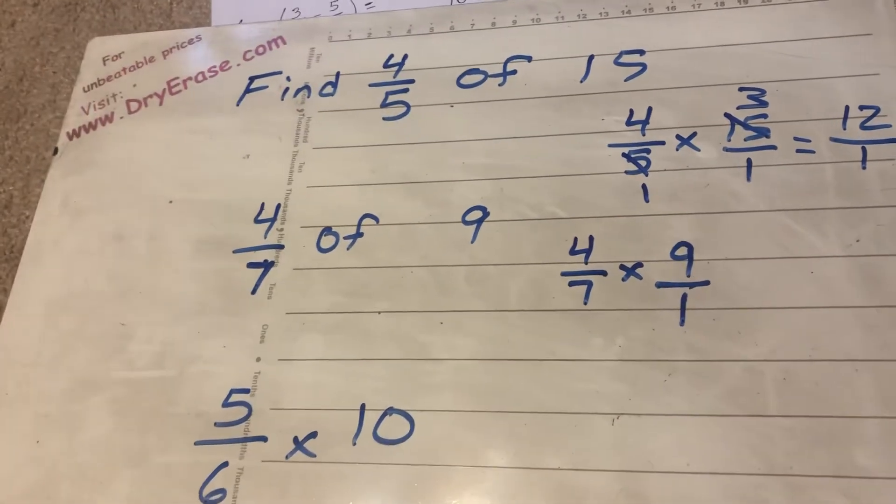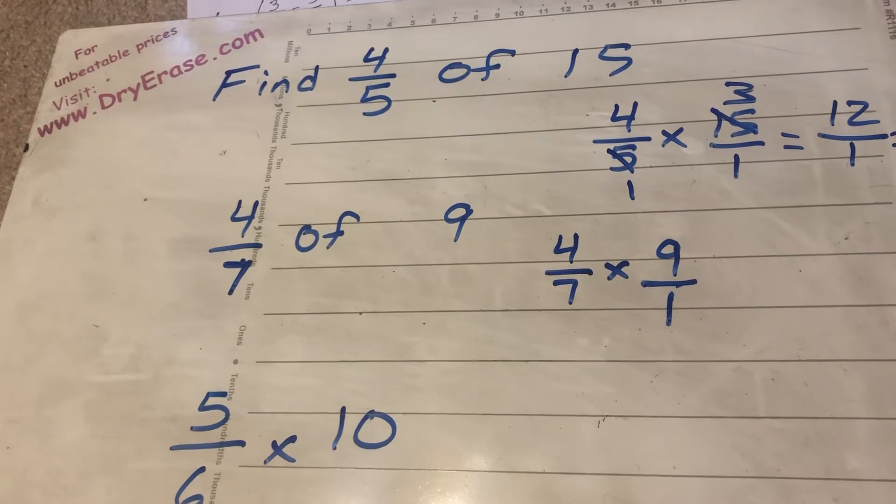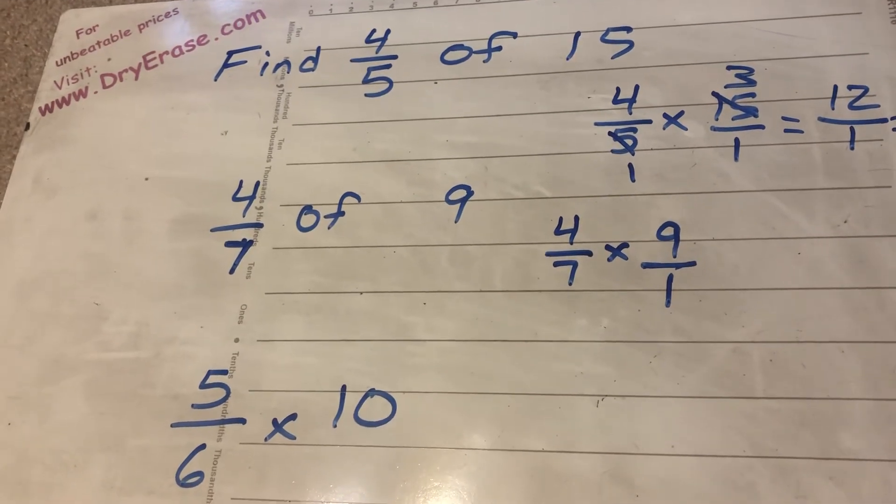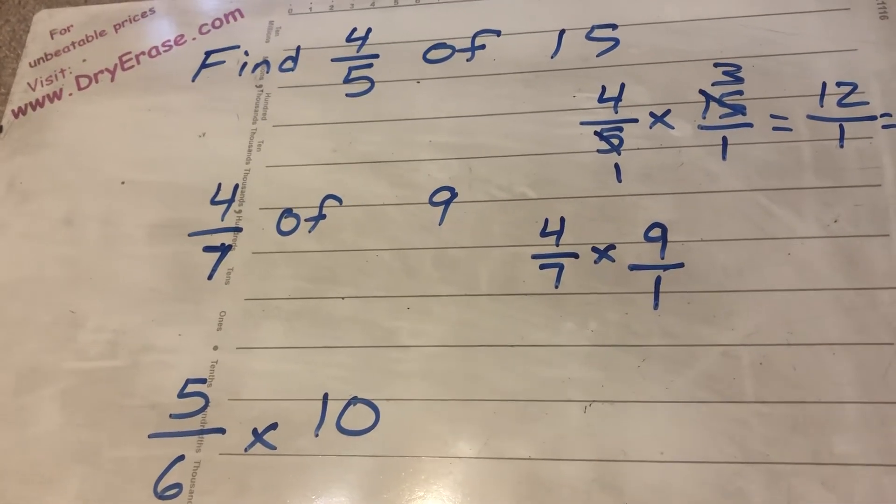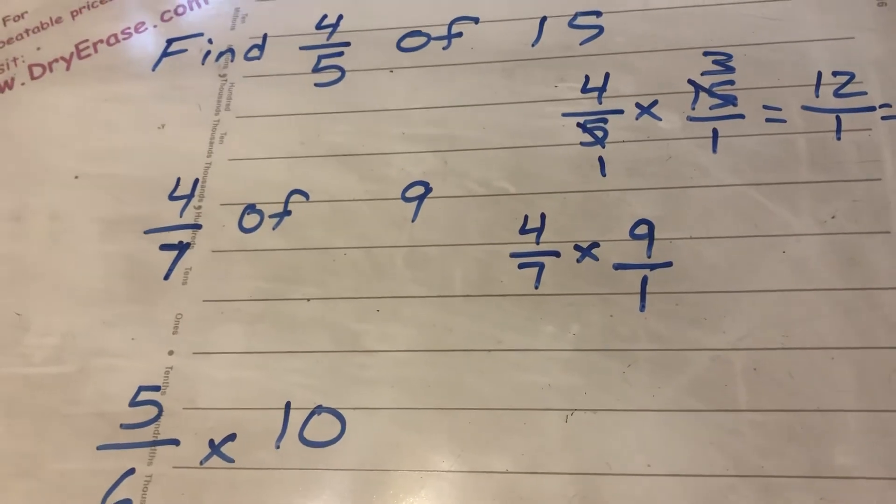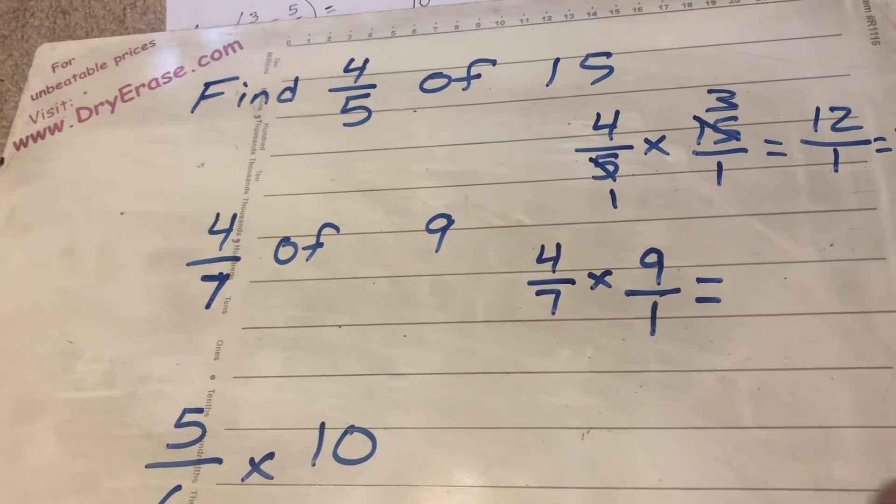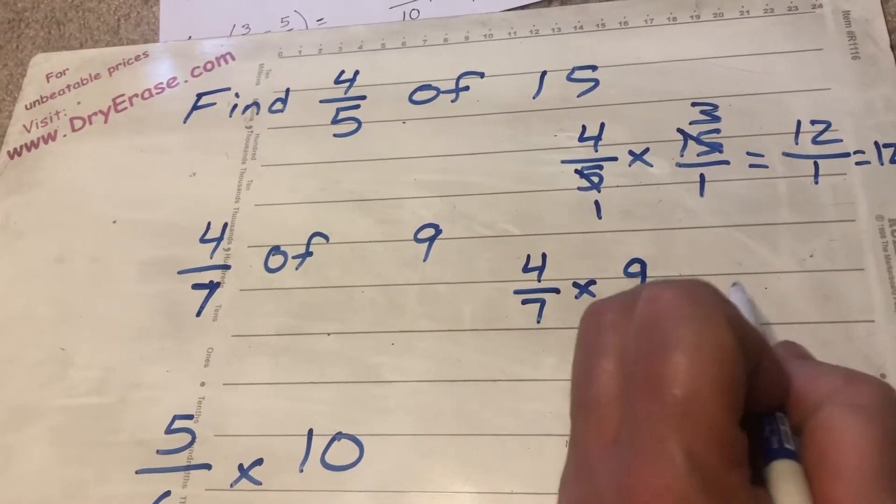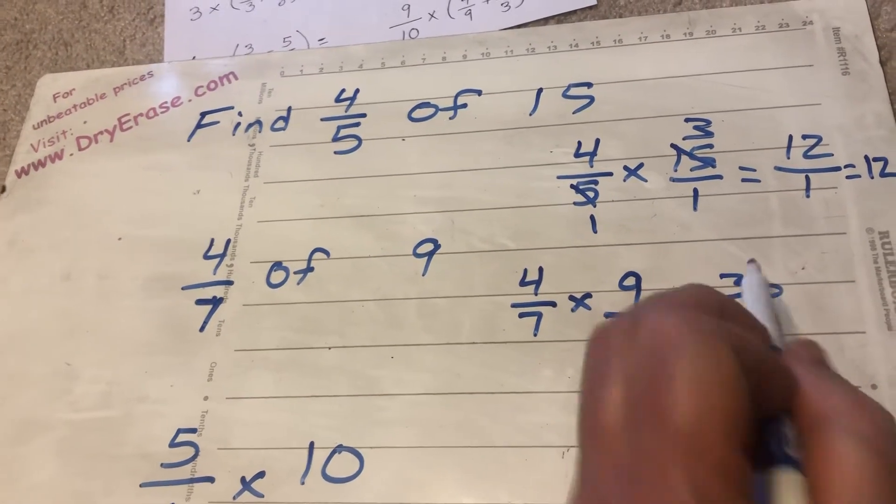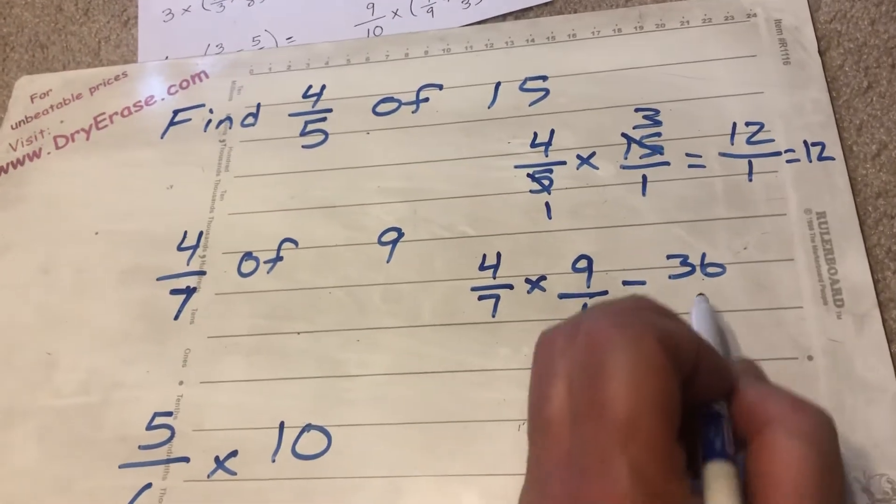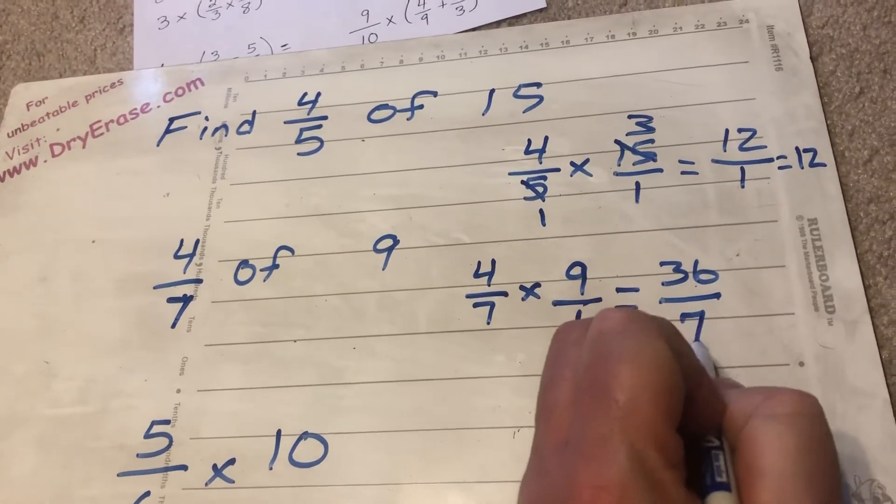Nothing besides 1 can go into both 9 and 7. And you'll see how quickly I'm able to figure that out. Fifth graders, that's once again putting a plug in for really knowing your multiplication and division facts. It just makes these steps much faster. So we're ready to multiply. 4 times 9 is 36. 7 times 1 is 7.